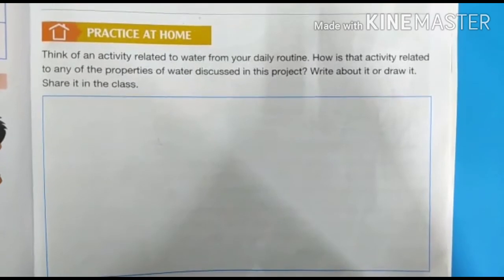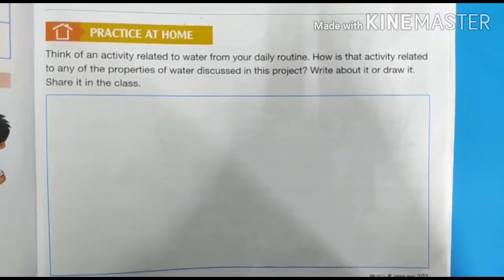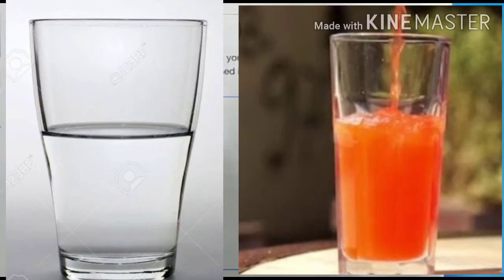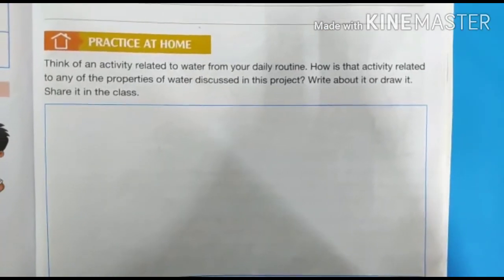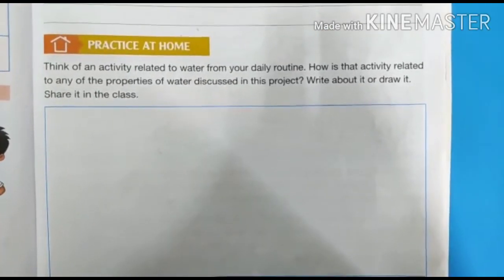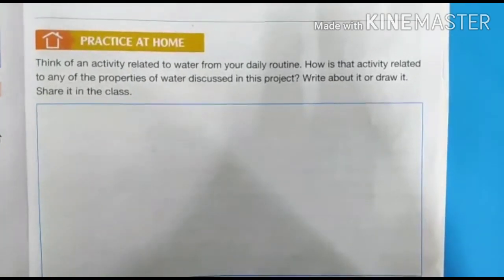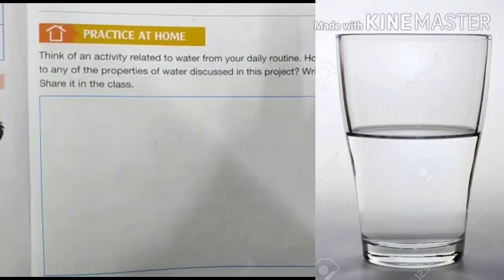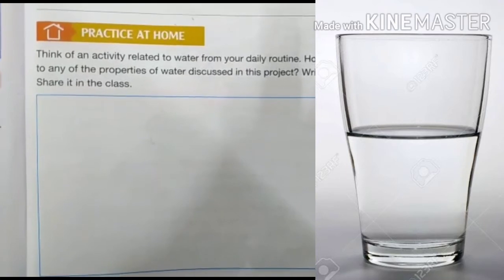For example, you can draw here a simple glass of water and a glass of rasna. It shows that you added rasna in the simple water and due to rasna, simple water changed into orange color. It shows when we mix any color in water, it takes that color. Water is colorless.